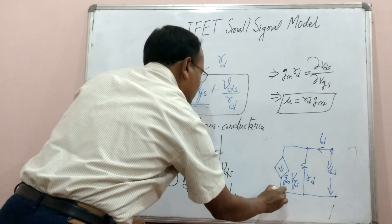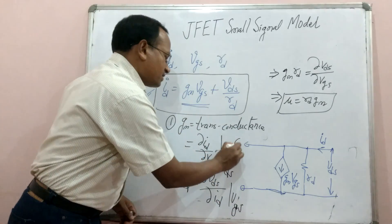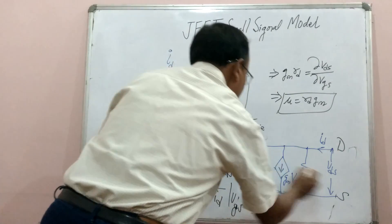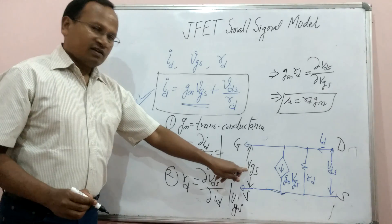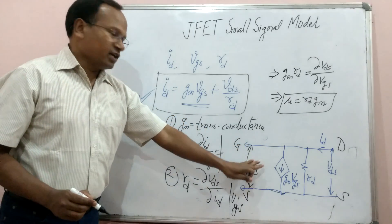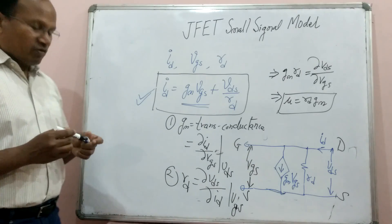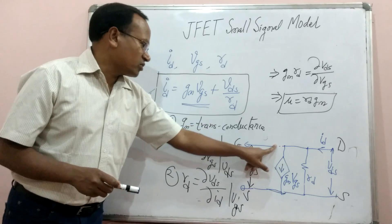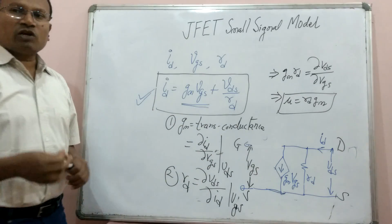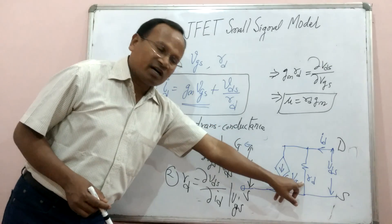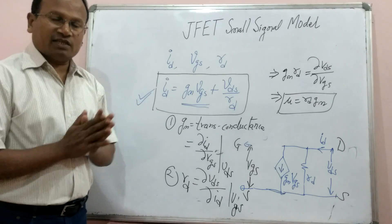The second component is a dependent current source GM·VGS directed accordingly. This gives us the small signal model. In the input side — between gate and source — the voltage VGS exists, but there is no current or resistance because the gate is always reverse-biased in JFET, so the input side is open. Because of VGS, there is a drain current ID = VDS/RD + GM·VGS. This is the complete small signal model of JFET.